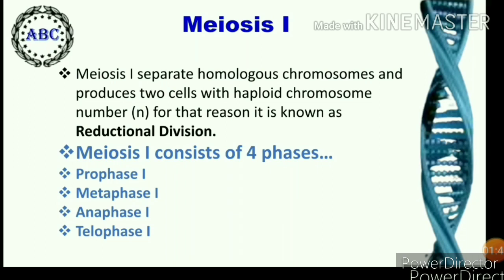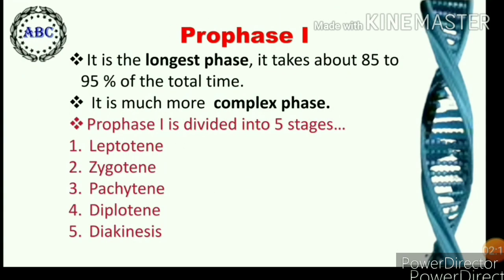Meiosis first is an important process called reductional division. It separates homologous chromosomes and produces two cells with haploid chromosome number, that is N number. For that reason, it is known as reductional division. Meiosis first consists of four phases: prophase I, metaphase I, anaphase I, and telophase I. Prophase I is the longest phase.